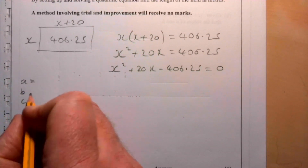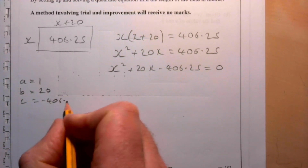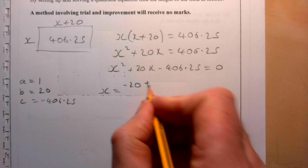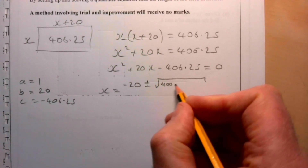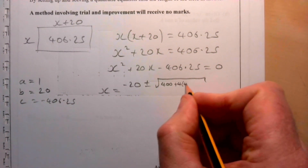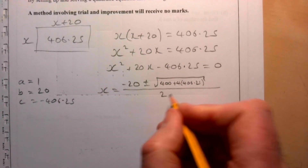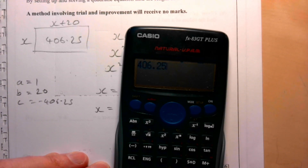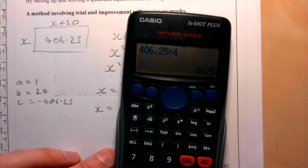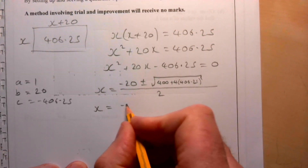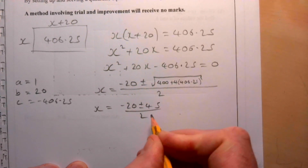Using the quadratic formula with a equals 1, b equals 20, and c equals minus 406.25: x equals minus 20 plus or minus the square root of 400 plus 4 times 406.25, all over 2. The square root simplifies to 45, so x equals minus 20 plus or minus 45 over 2.